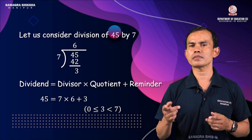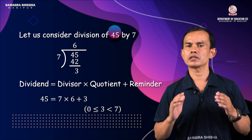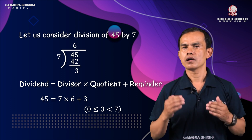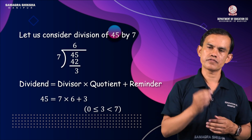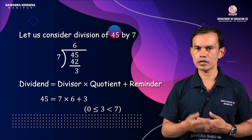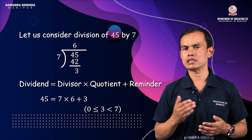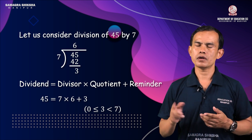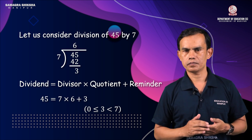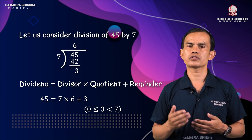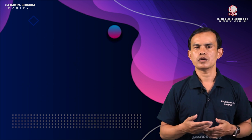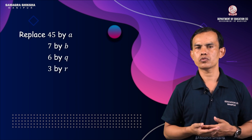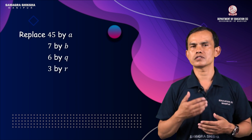For example, if the divisor is 5 and we try 35 into 45, the remainder is 10. But the remainder must always be less than the divisor. So we write: 0 ≤ 3 < 7. Here, 45 = 7×6 + 3, where a=45, b=7, q=6, and r=3.